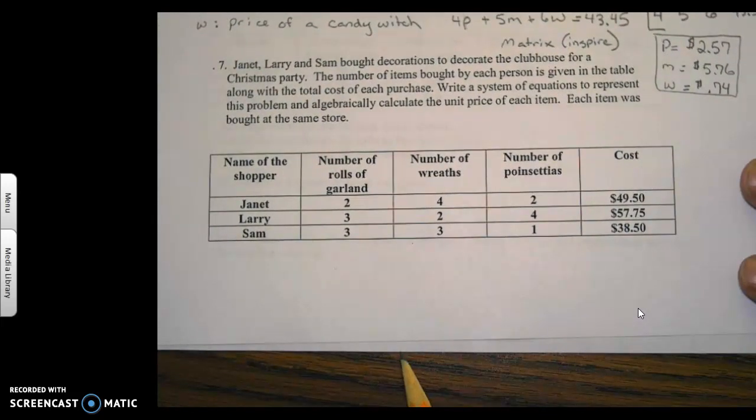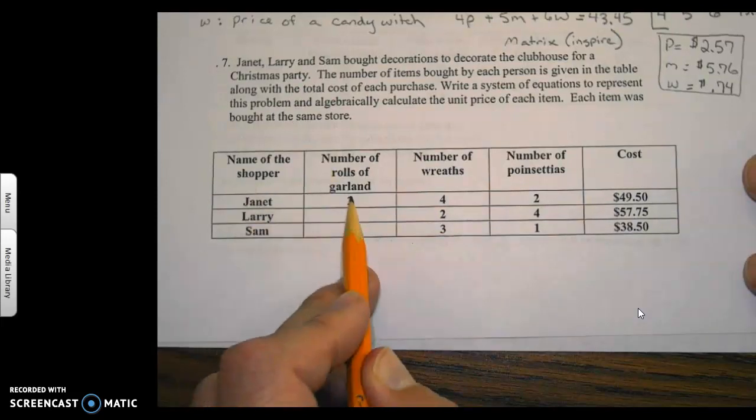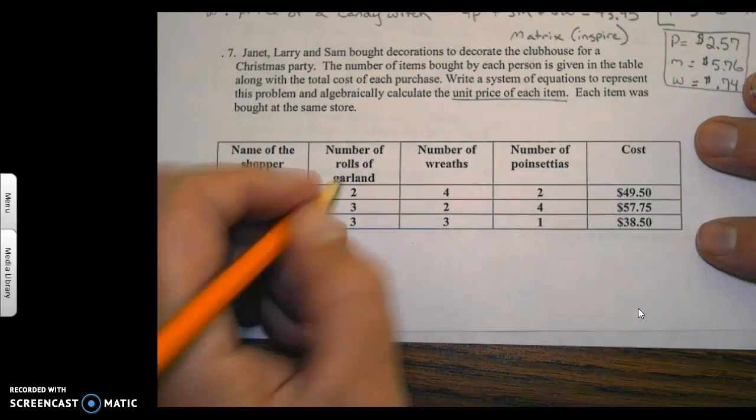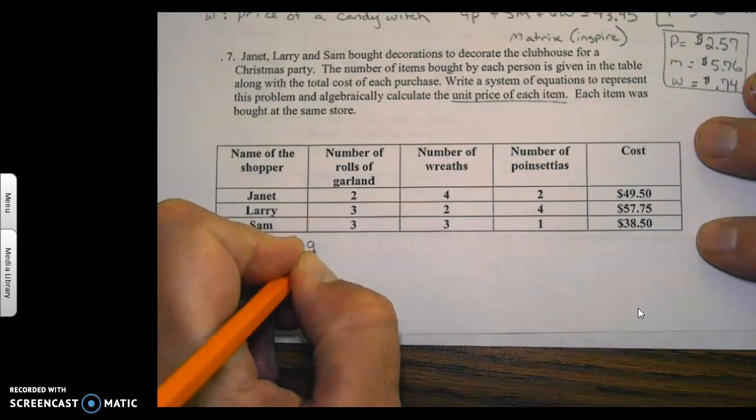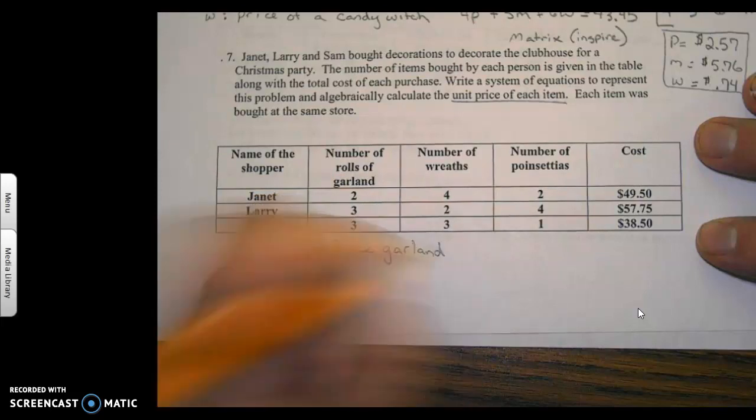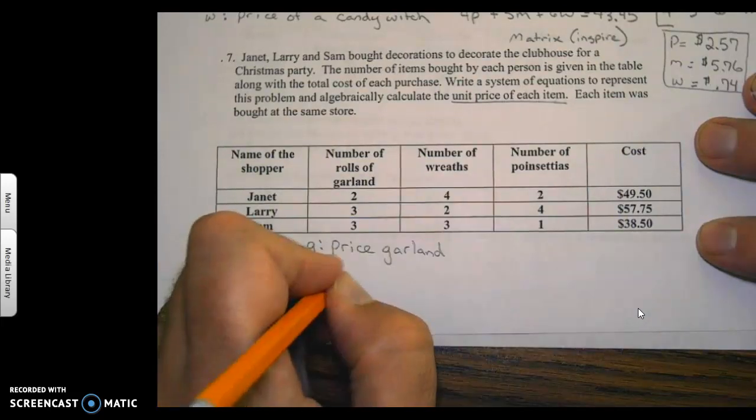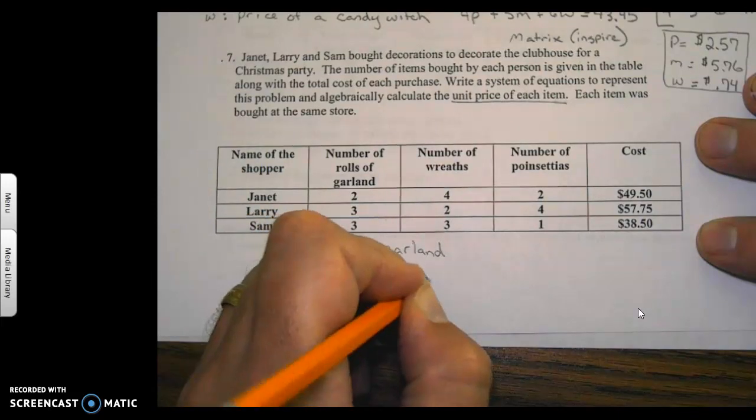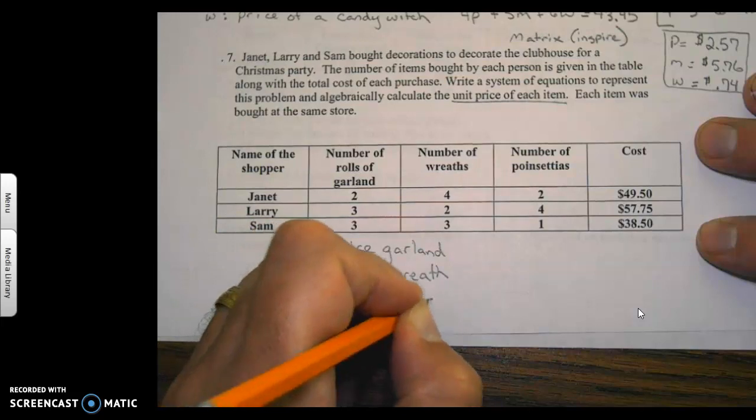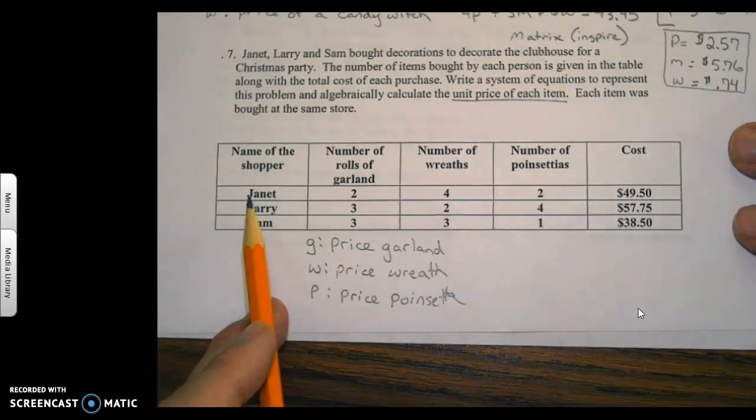The second type of problem here is when you're given the data in a table. Here we have Janet, Larry, and Sam. They bought decorations. Notice that they bought garland, and we're looking for the unit price of each item: garland, wreaths, and poinsettias. Setting up our variables: g would be the price of a garland, w the price of a wreath, and p the price of a poinsettia. I'm picking these letters myself. You could use x, y, and z, but I like to use these letters.